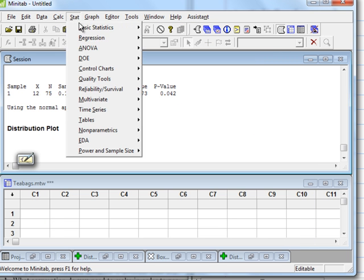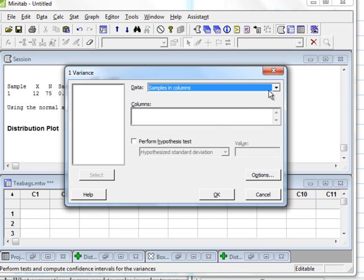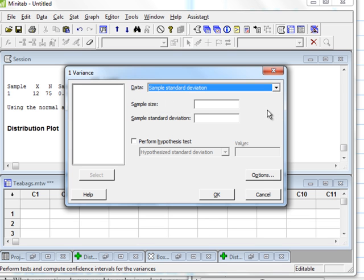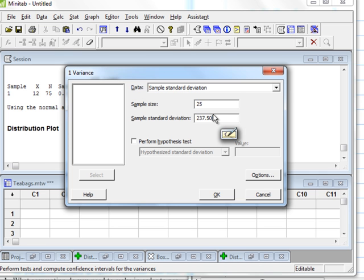Go to stat, basic statistics, and you'll see one variance as an option. I'm going to click on one variance. The sample standard deviation is what I have, so I choose that option under the data drop-down menu. Under sample size, the sample size was 25. The standard deviation was $237.52. I do want to perform a hypothesis test, so I click that box.